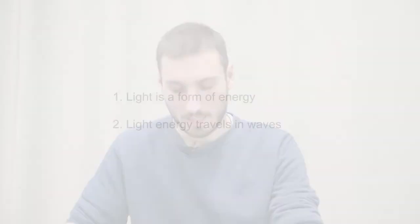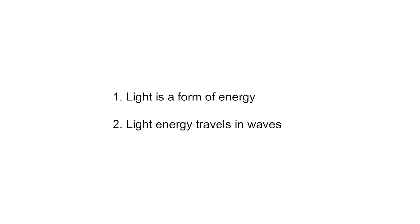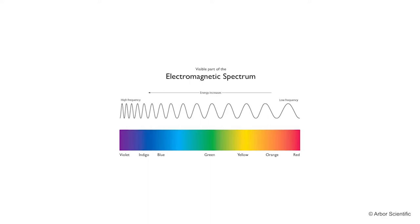Before we dive into the specifics of color in the image-making context, there's a brief chapter on color physics and the way the human eye perceives color and light. The first point is that light is a form of energy, and the second is that light energy travels in waves. This is probably a familiar scheme — the visible part of the electromagnetic spectrum. Some light travels in short waves and some in long waves. The red side of the spectrum travels in long wavelengths and blue and violet in short wavelengths. Shorter wavelength means more energy and thus higher frequency.